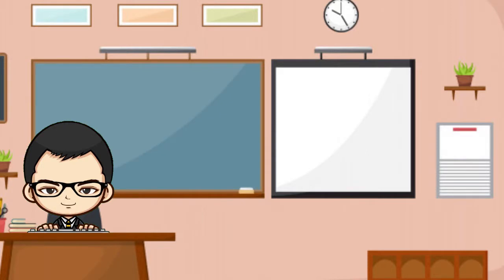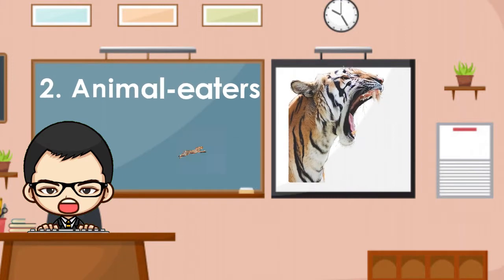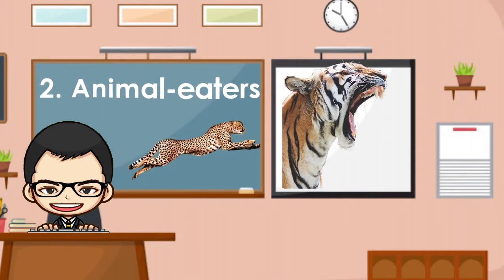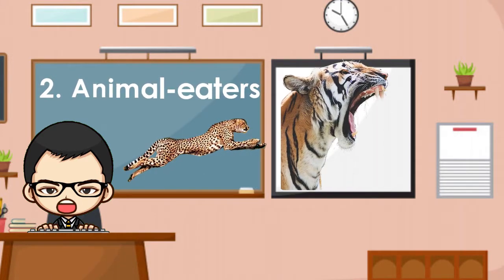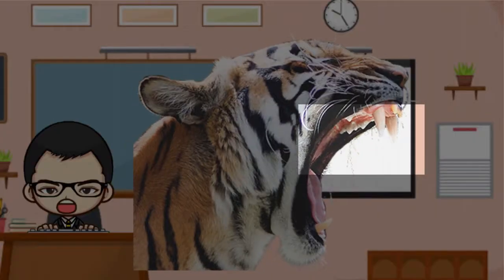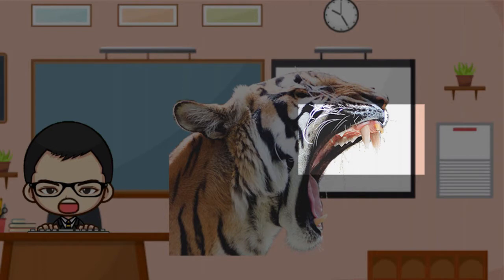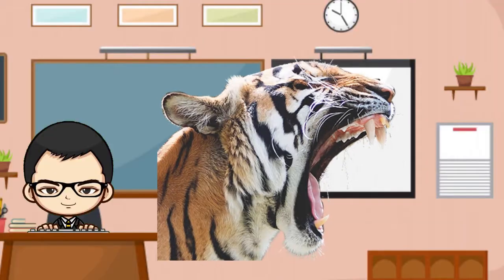Second, animal eaters. Some animals such as tigers and cheetahs eat only meat. That is why they have pointed teeth to tear meat.